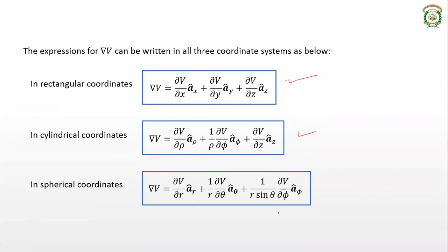In spherical coordinates with coordinates r, θ, φ: ∇V = (∂V/∂r)a_r + (1/r)(∂V/∂θ)a_θ + (1/(r sinθ))(∂V/∂φ)a_φ. These are the potential gradient expressions in all three coordinate systems. The derivations are out of syllabus scope and are in the textbook appendix, but it is better to memorize these as they are required for solving numerical examples.